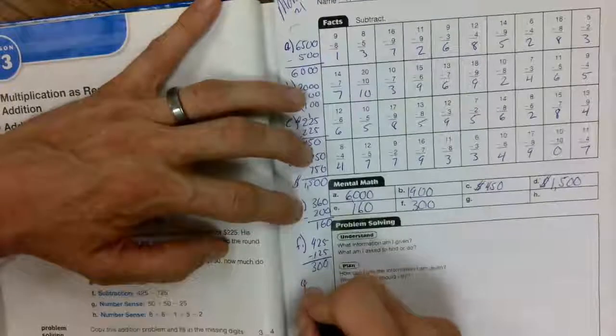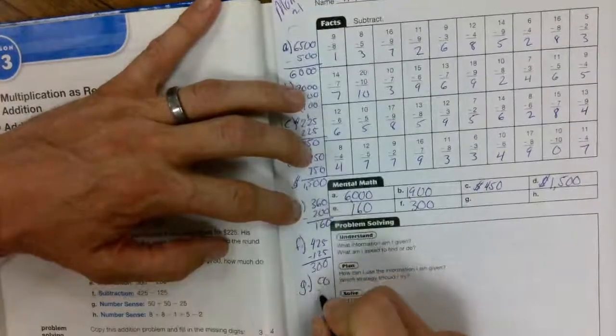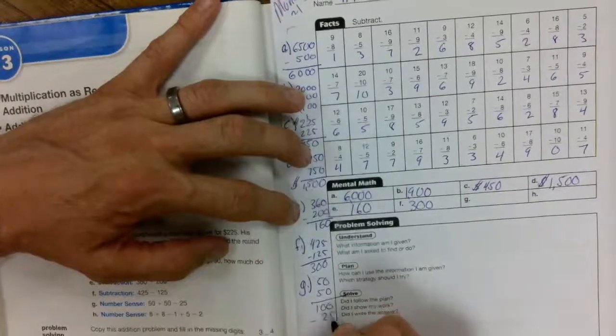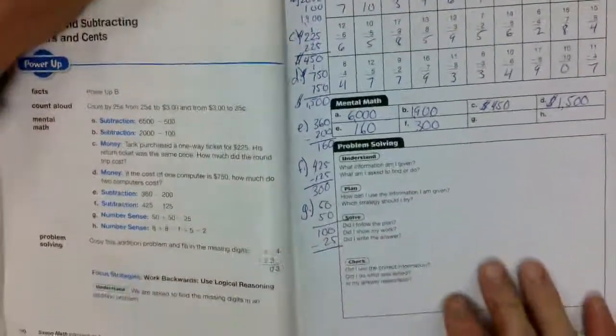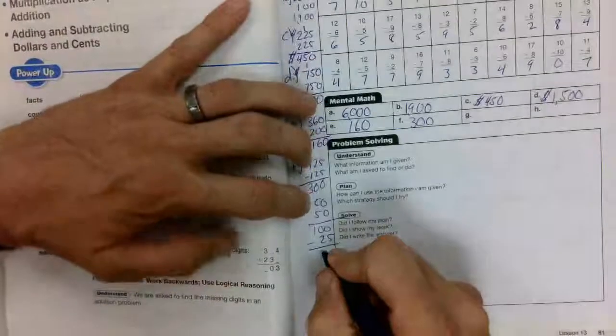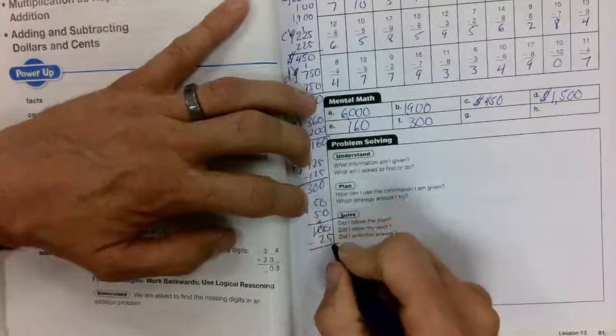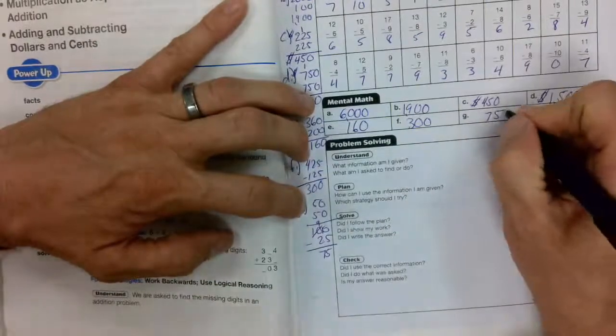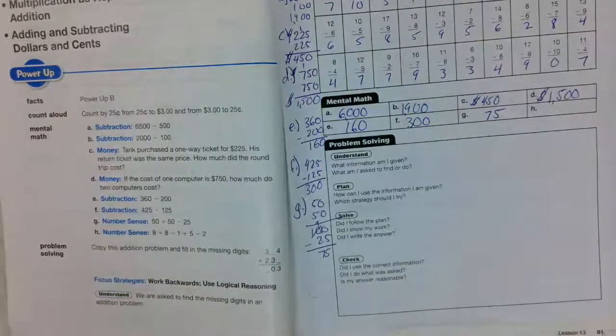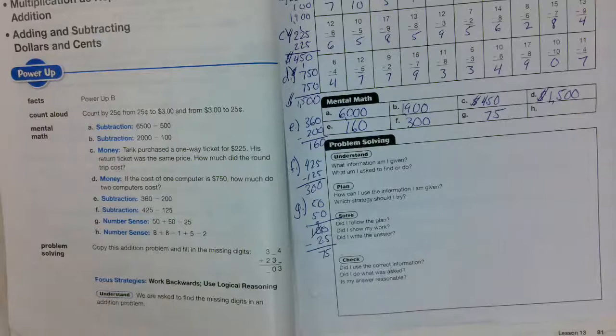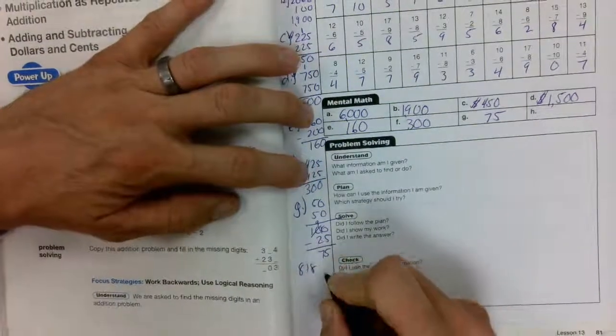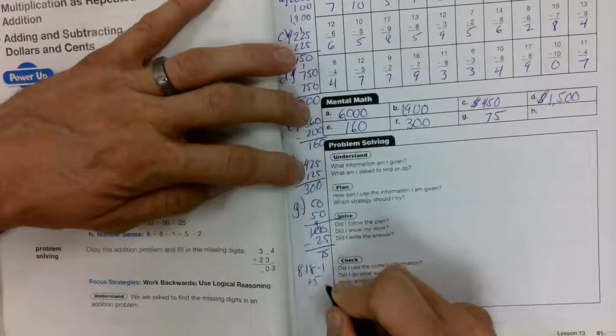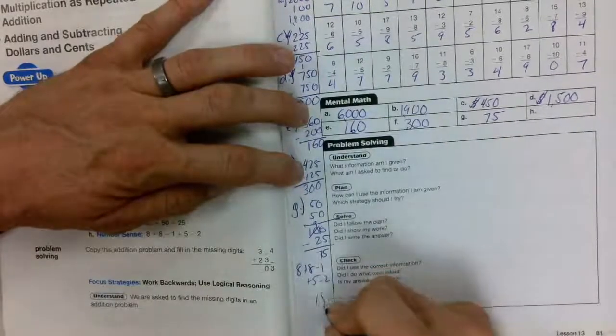G. We have 50 plus 50 equals 100. Then we're going to subtract 25. It's like taking away a quarter from a dollar. Gives you 75. Cross it out. Make it a 9. 10 minus 5 is 5. And 9 minus 2 is 7. 75. Take a look at H. Number sense. 8 plus 8 is 16. Minus 1 is 15. Plus 5 is 20. Minus 2 is 18.